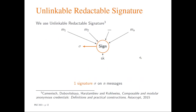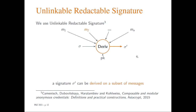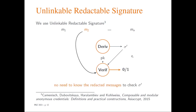To construct such a system, we use a very different tool: an unlinkable redactable signature scheme proposed by Kameny-Shetal a few years ago. The idea is that you can issue one signature on a set of messages, and given this signature sigma, you can derive a new signature sigma prime on a subset of these messages — for example, sigma prime derived only for message M2. The key property is that the derived signatures are unlinkable: given several sigma primes, you cannot decide if they were generated from the same sigma.